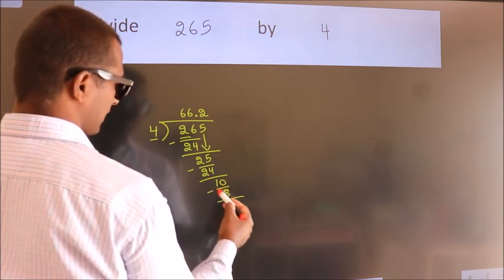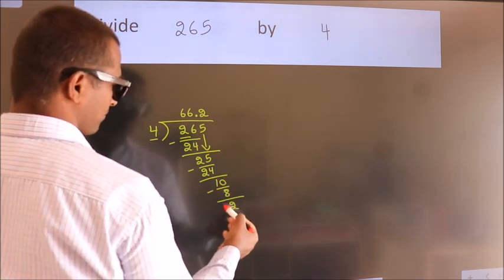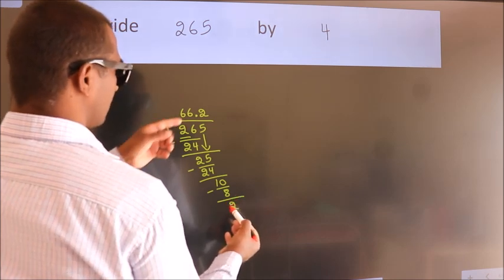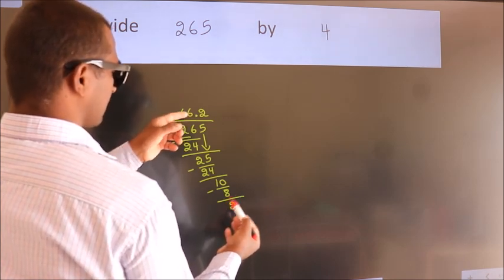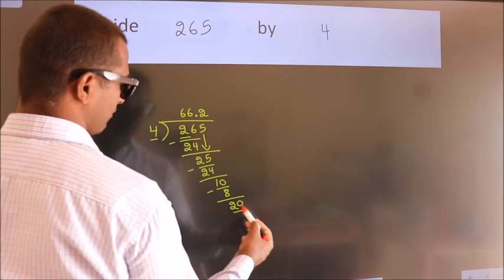Now we subtract and get 2. After this, we already have the decimal, so directly take 0, giving us 20.